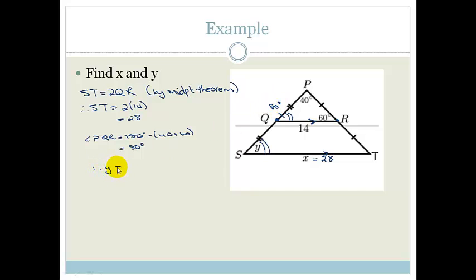So therefore this angle here is 80 degrees, therefore y is equal to 80 degrees. And what would you say? You would say it's because QR is parallel to ST and therefore we've got corresponding angles. And the only way you would know that QR is parallel to ST is if you know your Midpoint Theorem.